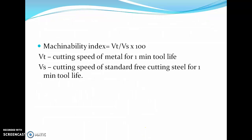The machinability index can be calculated as: machinability index = (Vt / Vs) × 100, where Vt is the cutting speed of the metal for one minute of tool life, and Vs is the cutting speed of the standard free-cutting steel for one minute of tool life. This is how a machinability index can be calculated for each material.